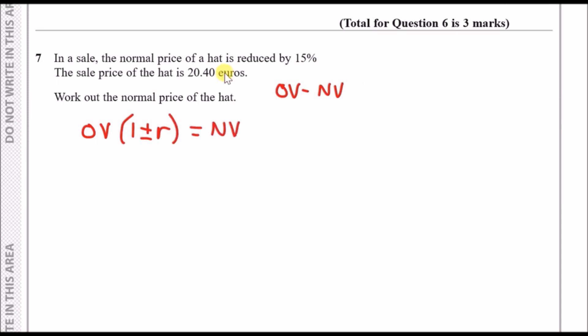This tells us that first you have the original value and it either increases or decreases by some rate and you'll get a new value. Because we know that the normal price of a hat is reduced we're going to use the negative sign, and R is going to be our 15%, and we know that the new price, the sale price, is 20.4. So our formula is now going to look like OV bracket 1 minus 15%. 15% is the same as 0.15, and we know that the new value is 20.40 euros.